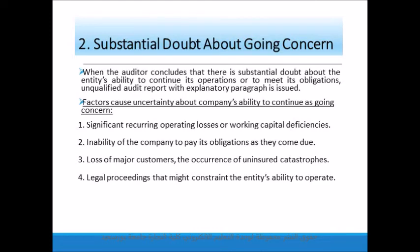An explanatory paragraph should be added after the opinion paragraph when the auditor has substantial doubt about the entity's ability to continue its operations as a going concern or to meet its obligations. This takes place when the company has significant recurring operating losses or working capital deficiencies, when the company is unable to pay its obligations when due, when the company loses major customers, or when the company has legal proceedings that might prevent it from continuing its operations.